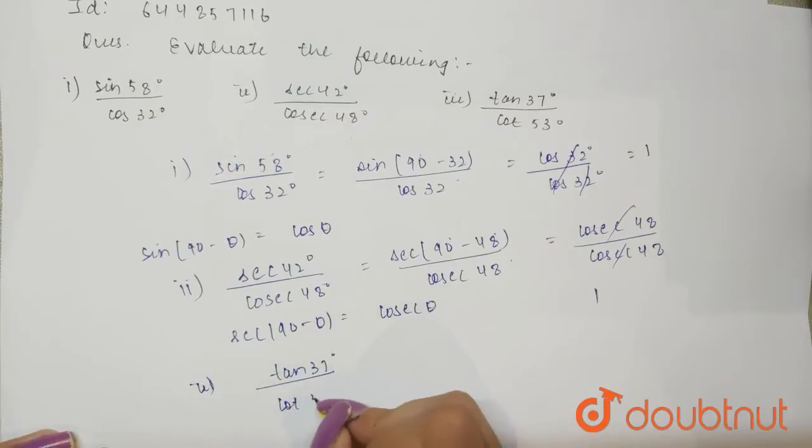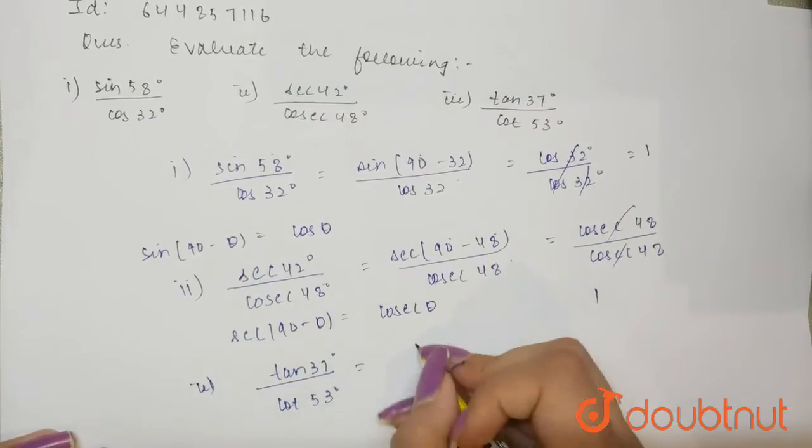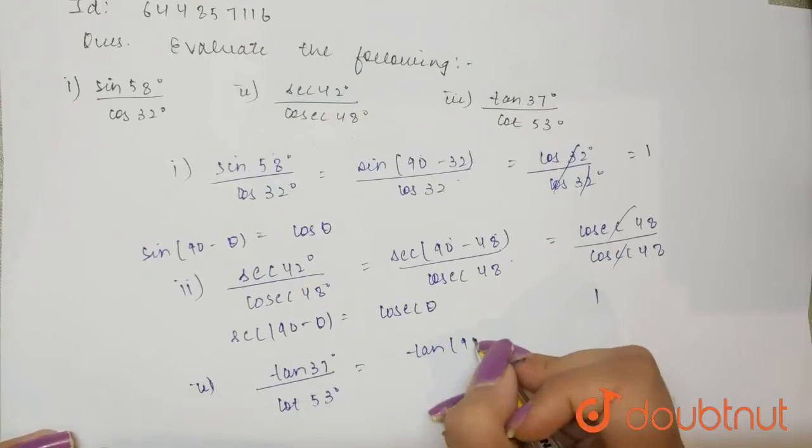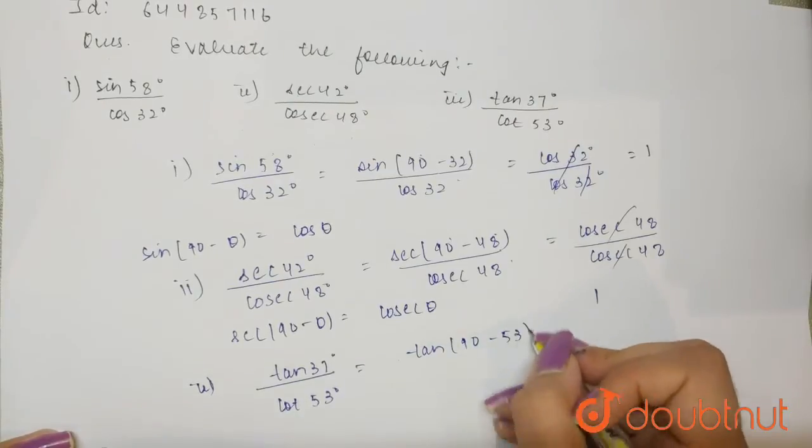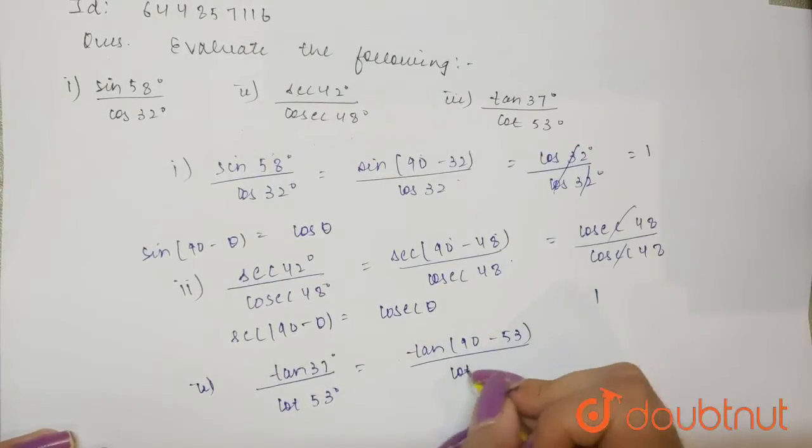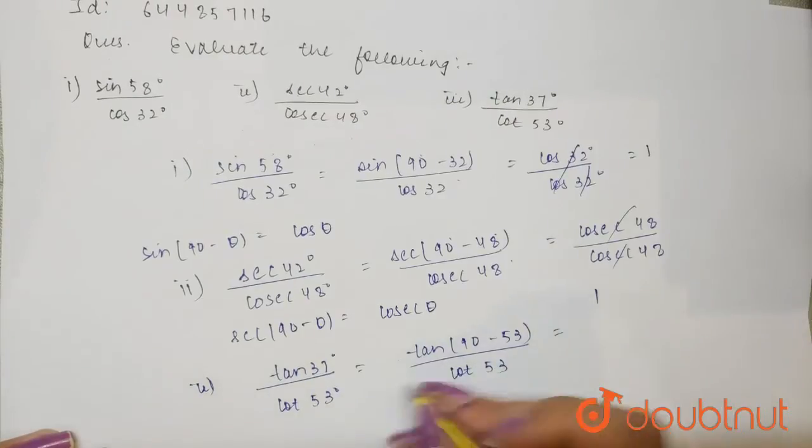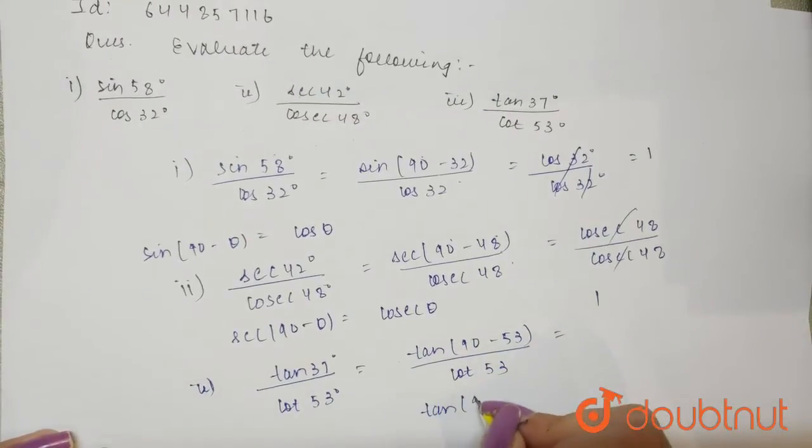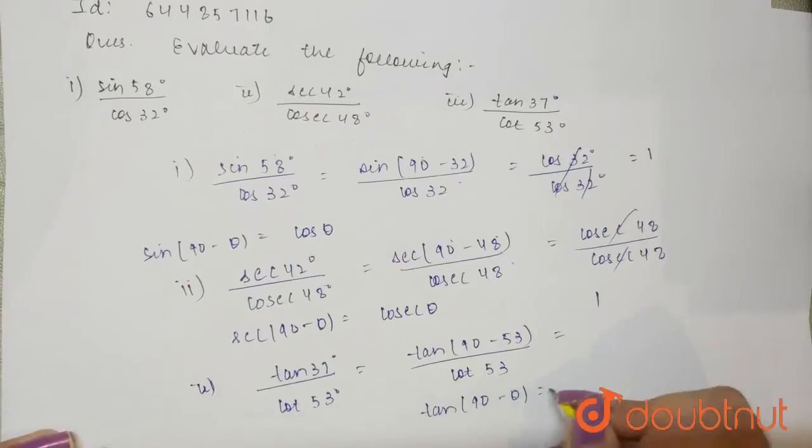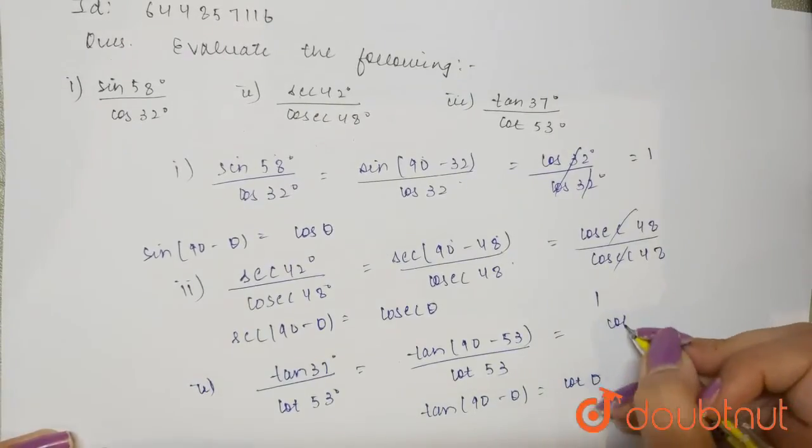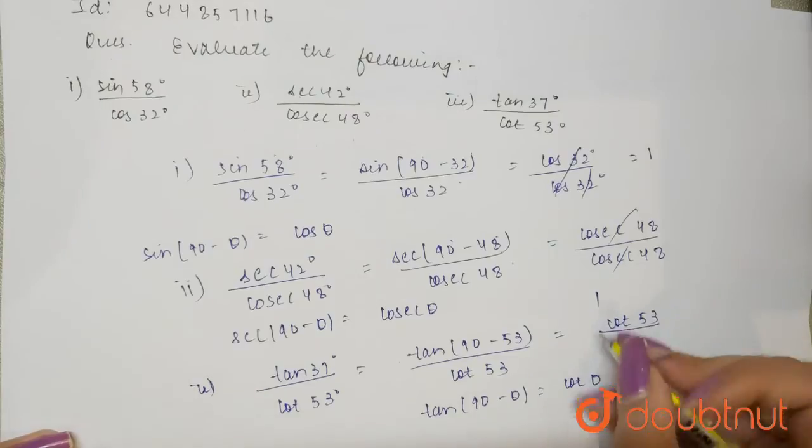53°. Now tan of (90 - θ) equals cotangent θ. That means this equals cotangent 53° divided by cotangent 53°, which will be one. So these are your answers.